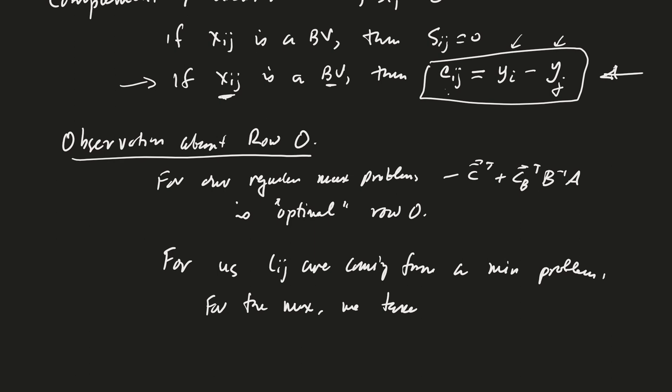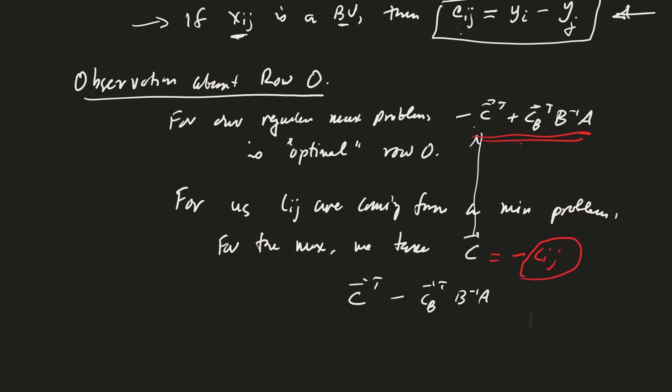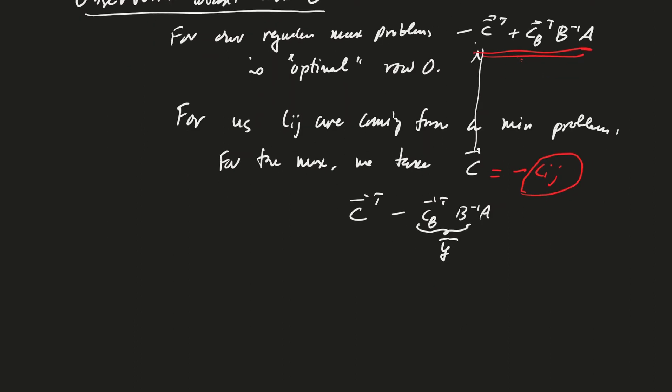For us, the cij are coming from a min problem. So when we take our maximization for the simplex method, we're taking the negative of the c's. For the max, the c here in this notation is actually equal to minus the cij. Then when we construct our equation, if I'm writing this in terms of the cij, that becomes c^T - c_B^T B^{-1}A, or shorthand, this is just y, our solution to the dual. So let's call it c^T - y^T A. These are the optimal row zero values.